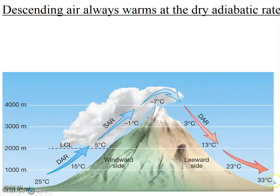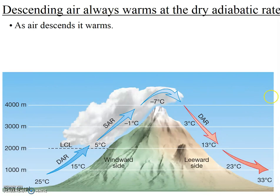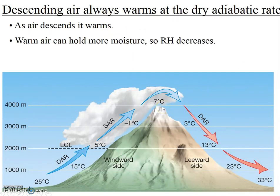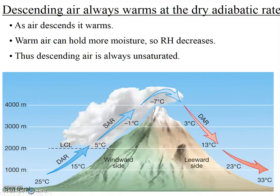Now what happens when the air gets to the top and falls back down over the mountain? Descending air always warms at the faster rate — at the dry adiabatic lapse rate — warming 10 degrees for every 1,000 meters it goes down. Interestingly, that means on the other side of the mountain it's warmer than it started on the first side. Why? Because descending air is always unsaturated. As air descends, it warms, so as the temperature goes up, the relative humidity goes down. The moment the temperature starts to go up even a little bit, the relative humidity drops below 100%. So descending air is always unsaturated and always warms at the dry adiabatic lapse rate.